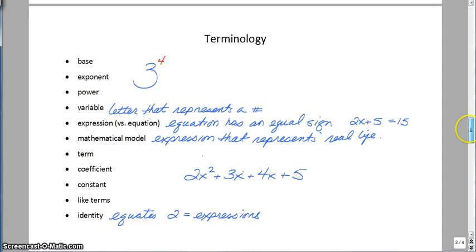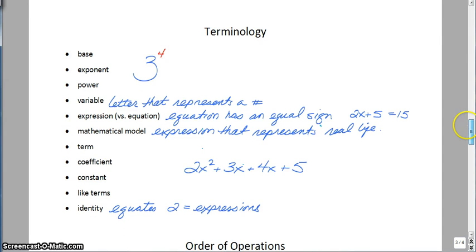Here's some terminology that you're going to need to know for this year. Some of these are not broken down into definitions, more of an example. Once you see it, it will help you understand. A base, exponent, and power, that's all pretty much a group together. The base is 3. The exponent in this example is 4. Now, if we take this whole thing, 3 to the 4th power together, that's a power.